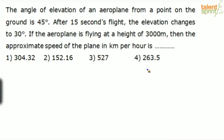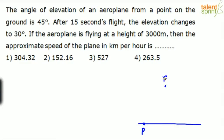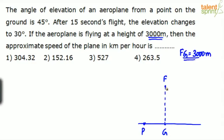Let's try it out. This is the ground level. From a point on the ground — let's say this is the point from where you are observing the aeroplane — initially the angle of elevation of the aeroplane from point P is 45 degrees. Let's say here is the aeroplane, flight F. The height is given as 3000 meters, so point G is directly below F. FG equals 3000. The angle of elevation from point P to F is 45 degrees.